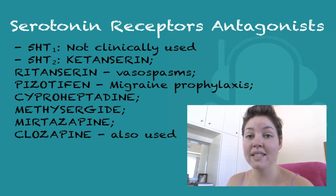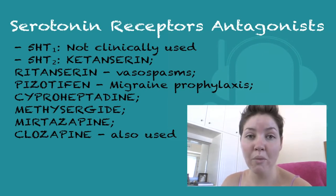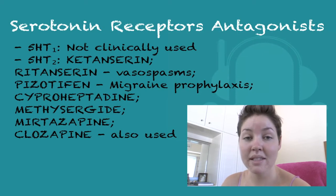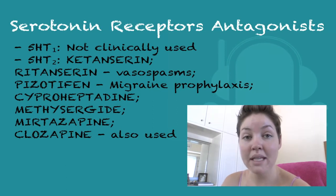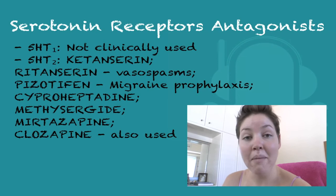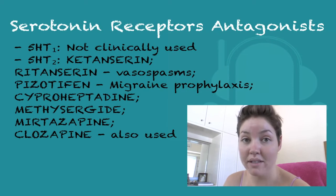Now I'm going to go on to talk about serotonin receptor antagonists. Serotonin 1 receptor antagonists are not clinically used. Serotonin 2 receptor antagonists include ketanserin and ritanserin, as well as mirtazapine. These are used for vasospasms, such as in Raynaud's syndrome. Mirtazapine is an alpha blocker and is used for depression treatment. Pizotifen is used for migraine prophylaxis. We also use cyproheptadine and methysergide. Cyproheptadine is a histamine 1 antagonist and can cause sedation and weight gain. Methysergide is used for carcinoid tumours and can cause mediastinal and peritoneal fibrosis. Pizotifen can cause weight gain and is a muscarinic receptor blocker.